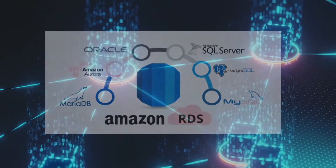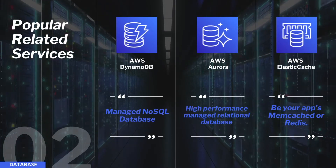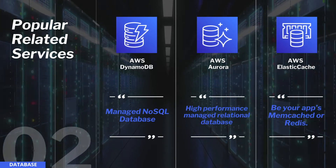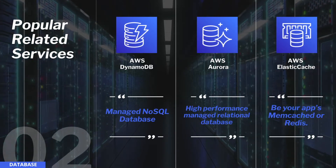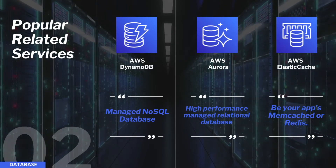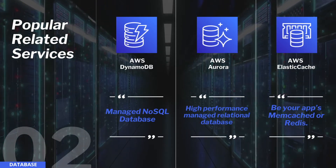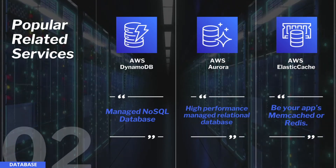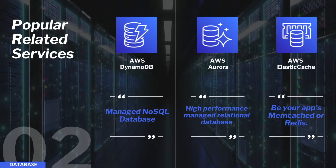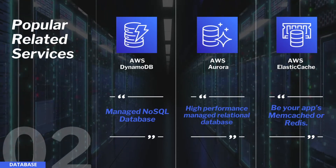Popular related services are AWS DynamoDB — a high-performance managed NoSQL database that supports both key-value and document store. Also AWS Aurora — a MySQL and PostgreSQL compatible high-performance distributed relational database. And AWS ElastiCache — an AWS service that makes it easy to set up, run, and scale popular open-source in-memory data stores in the cloud, basically like Memcached and Redis.